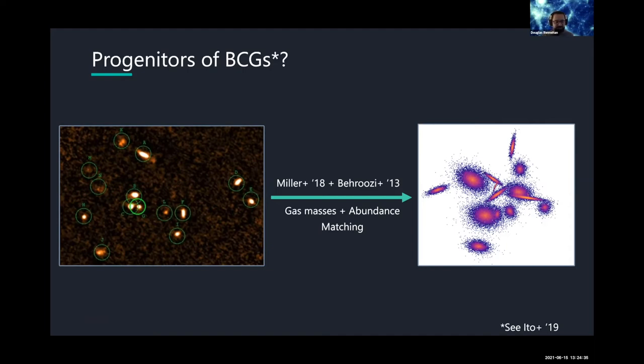So what I wanted to do, I wanted to ask the question how fast do these protoclusters become BCGs and what are the properties of those BCGs? So can we do it in an isolated simulation first to have control over it to see what comes out? So I did that by taking the cold gas masses from Miller et al. 2018 and using the abundance matching results from Behroozi in 2013 to produce an isolated simulation, many realizations in an isolated simulation of this SPT 2349 protocluster.